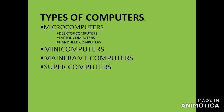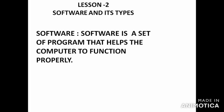Mainframe computers are very powerful and are mostly used in airline and railway ticket reservation, banks, universities, and scientific laboratories. Super computers are the most powerful and are used for weather forecasting. You must know the examples — for instance, Cray-2 is an example of a super computer and IBM Z Series is an example of a mainframe computer. Learn each example thoroughly.